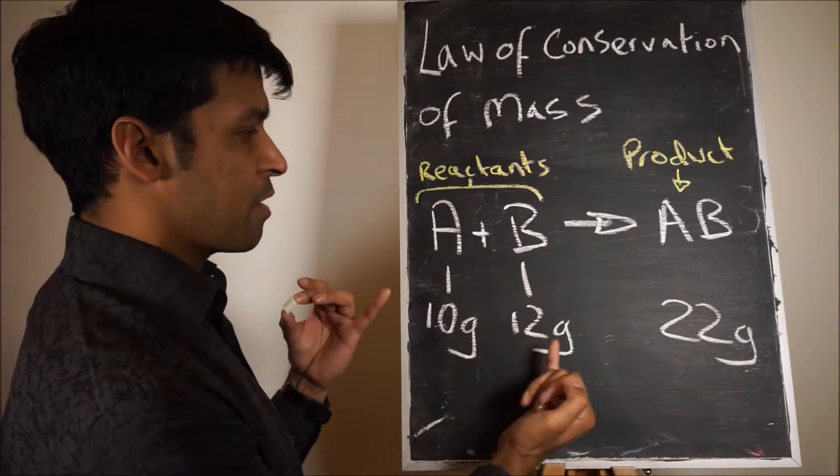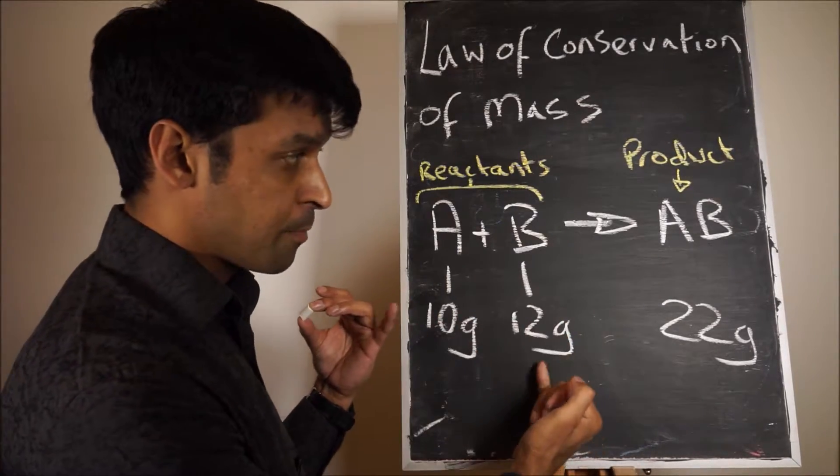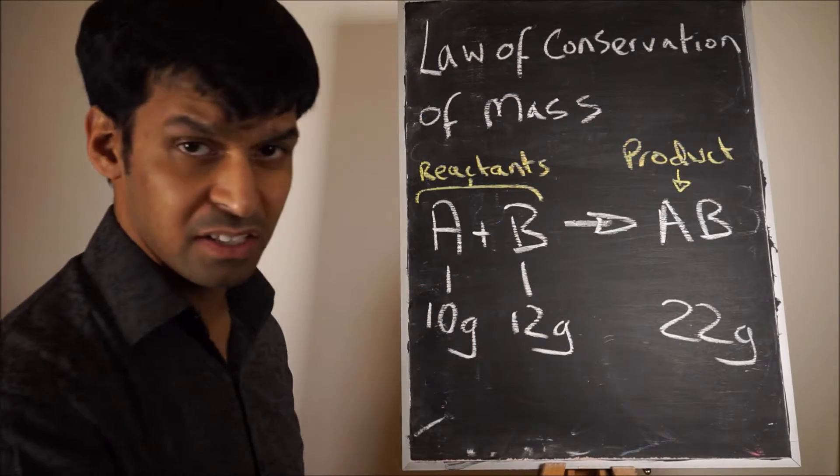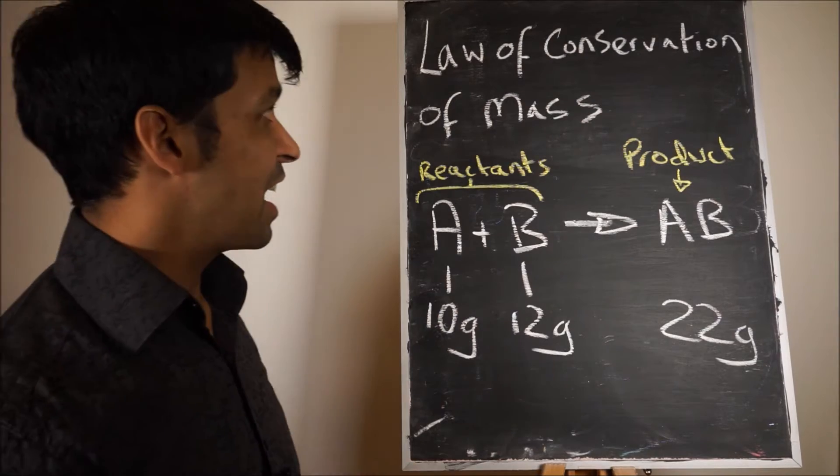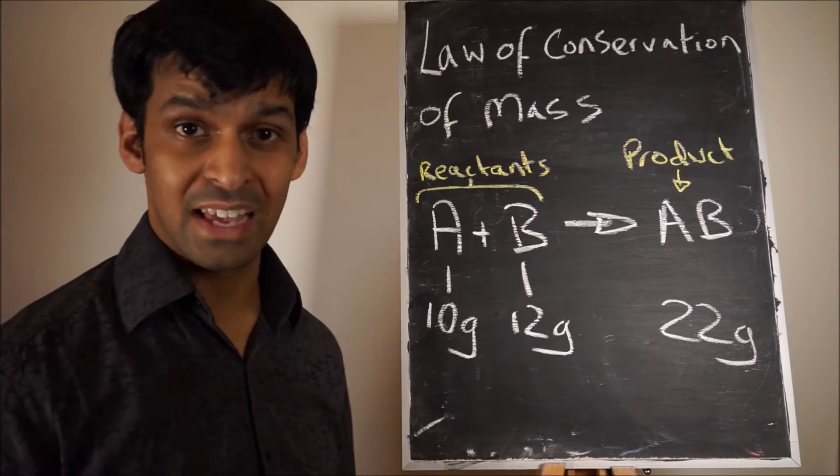what you'd do is you'd calculate the mass of the reactants and the mass of the product, and then you'd say the mass of the reactants equals the mass of the product, and therefore mass is conserved.